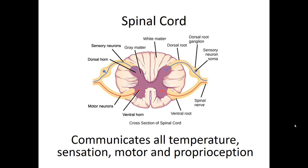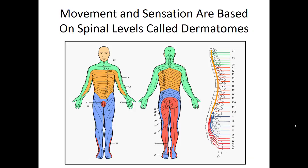The spinal cord is the communication between the brain and the rest of the body. It communicates all temperature, all sensation, every motor impulse, and proprioception — the body's perception of where it is in space. The nerves coming out of the spinal cord vary by where they exit: cervical nerves innervate the neck and upper arms, the thoracic spine innervates the chest and belly, lumbar is mostly the legs and pelvis, and the sacral area is the genitourinary area.